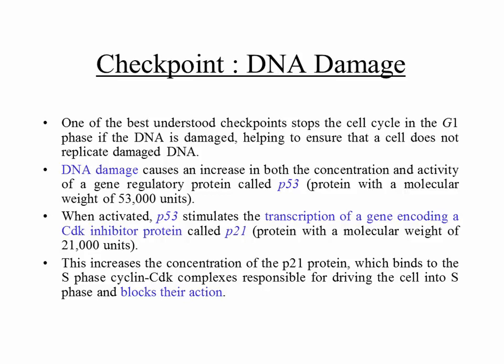One of the best understood checkpoints stops the cell cycle in G1 if DNA is damaged. Any time you step out in the sun you get some DNA damage — ultraviolet radiation causes thymine dimers. If DNA is damaged, it should not be replicated because then you're propagating the damage, so there has to be some mechanism for arresting the cell cycle.